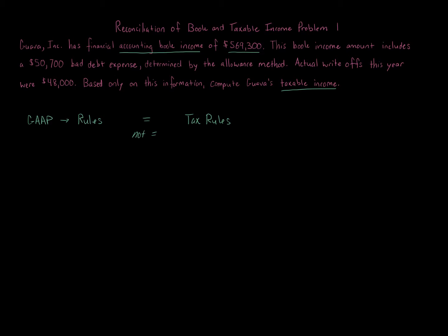Regardless of the method — straight-line versus MACRS — the total amount of depreciation taken over the life of the asset will be the same. That's what a temporary or timing difference is. If you're recovering the full amount over five years but in different amounts depending on the method, the total across all years is the same. So book or GAAP uses straight-line; tax uses MACRS, which is almost always faster depreciation earlier, with less in later years.